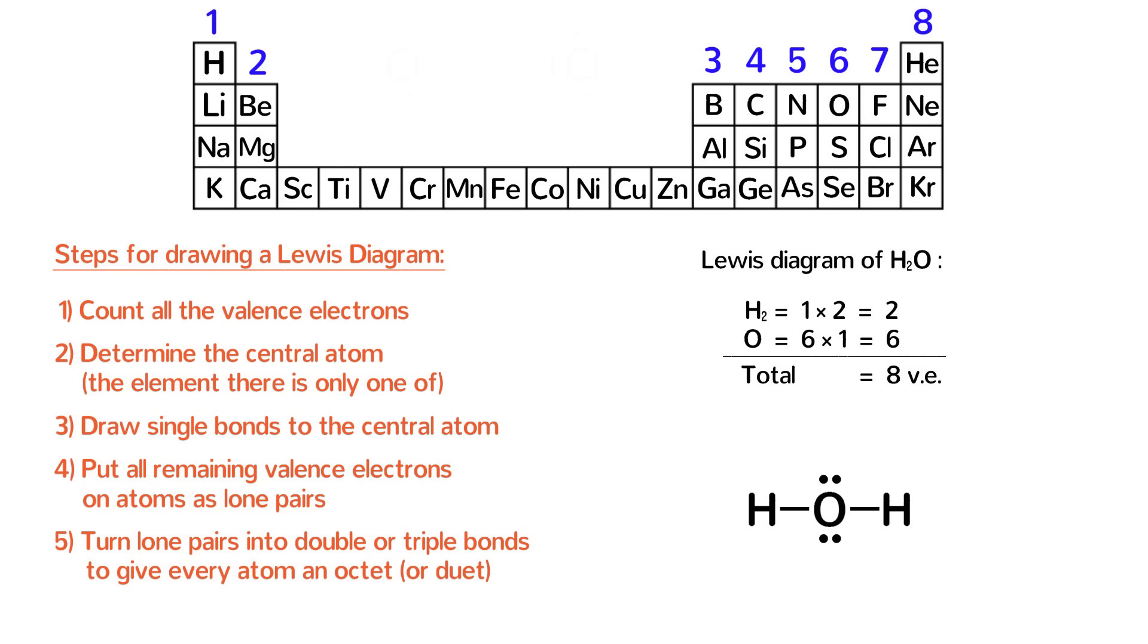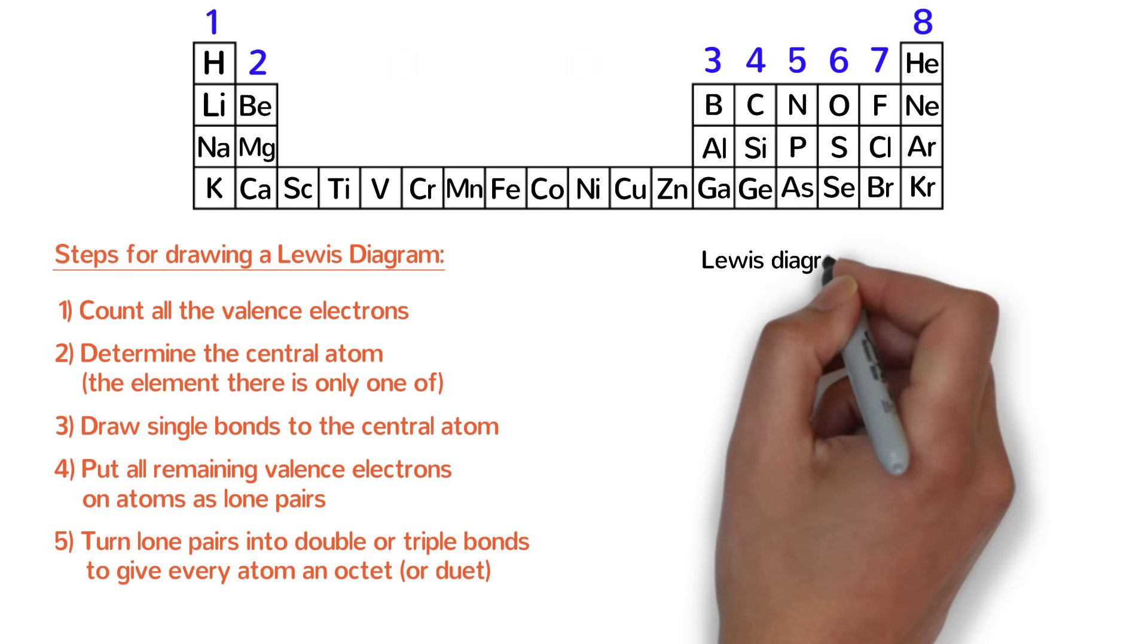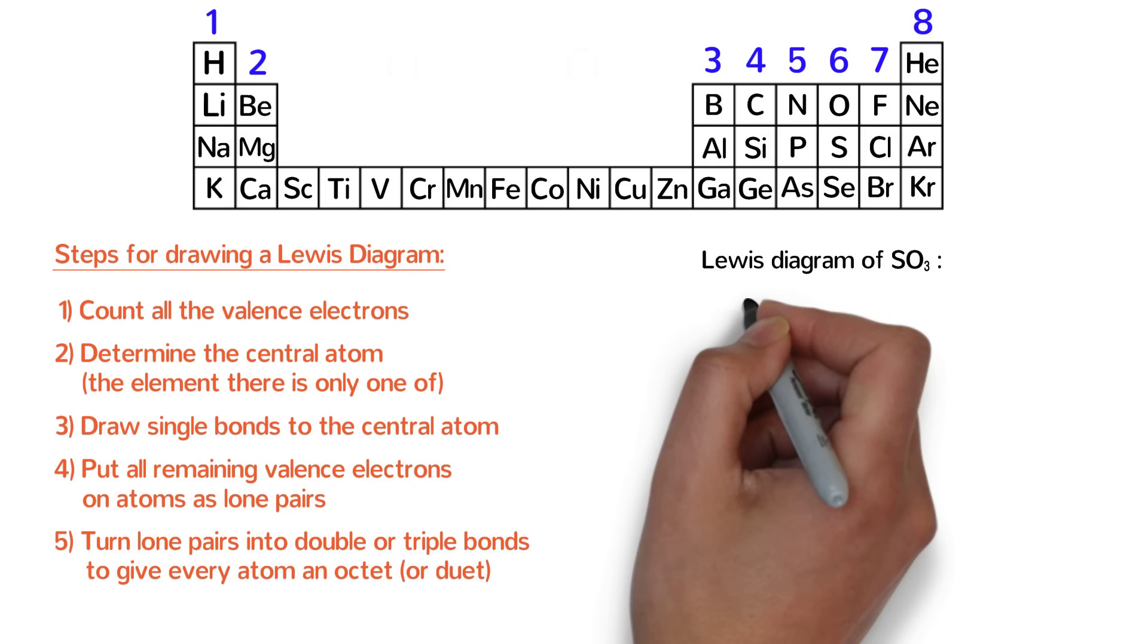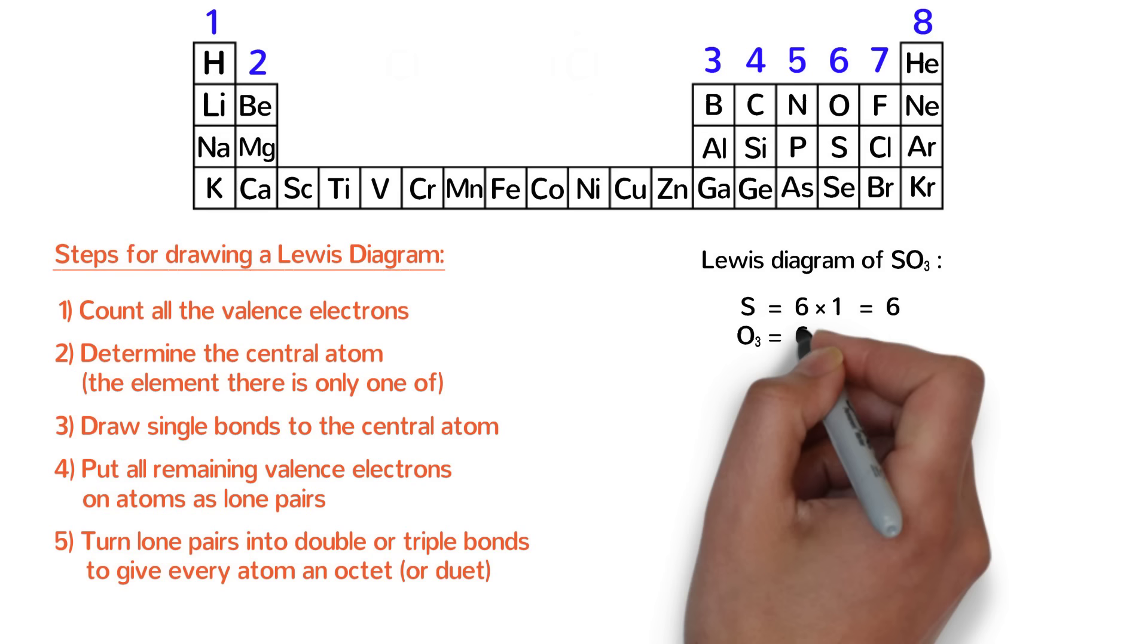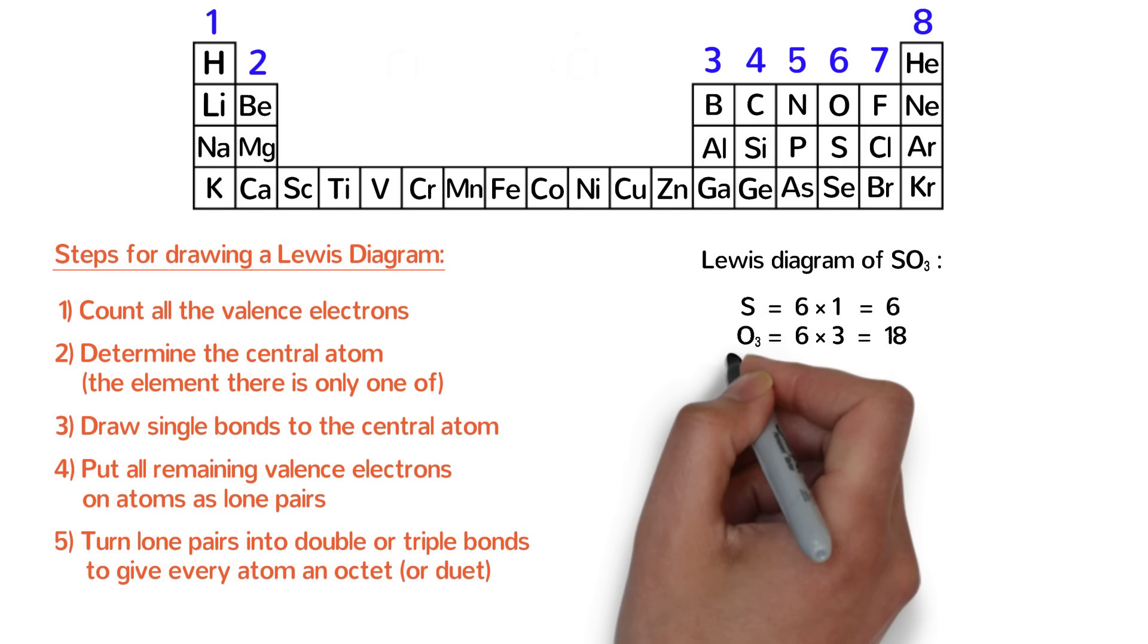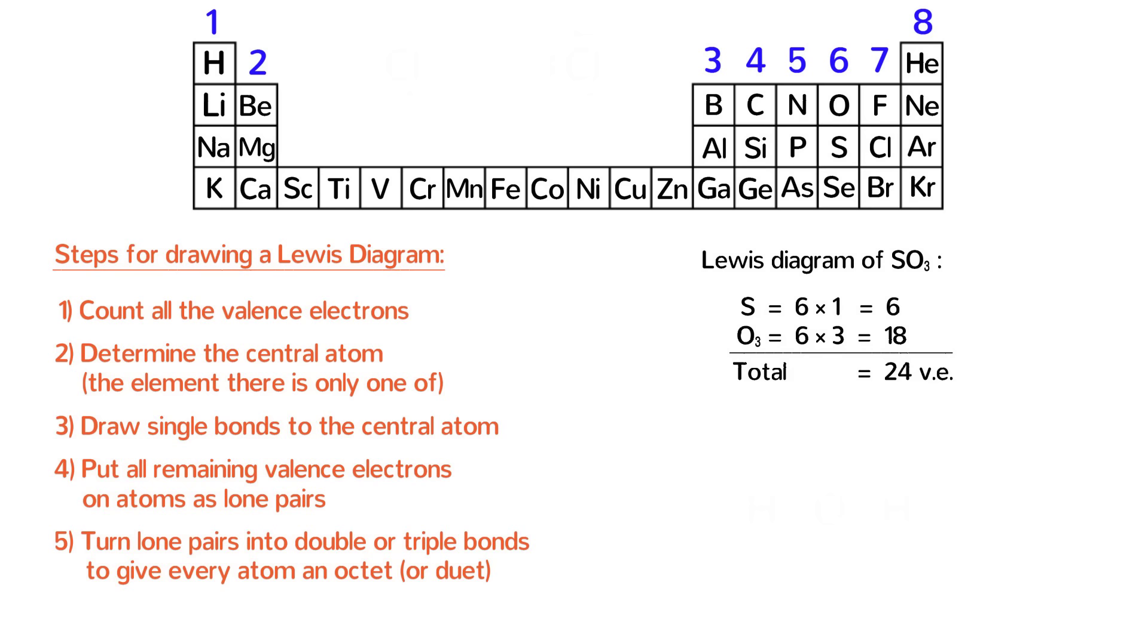Alright, let's try one more example just to make sure that we've got this. Draw the Lewis diagram of sulfur trioxide. Once again, the first step is to count all the valence electrons. There is one sulfur with six valence electrons, and there are three oxygens with six valence electrons each. Six times three gives us 18 valence electrons for the three oxygens. The total would be six plus 18, which equals 24 valence electrons.